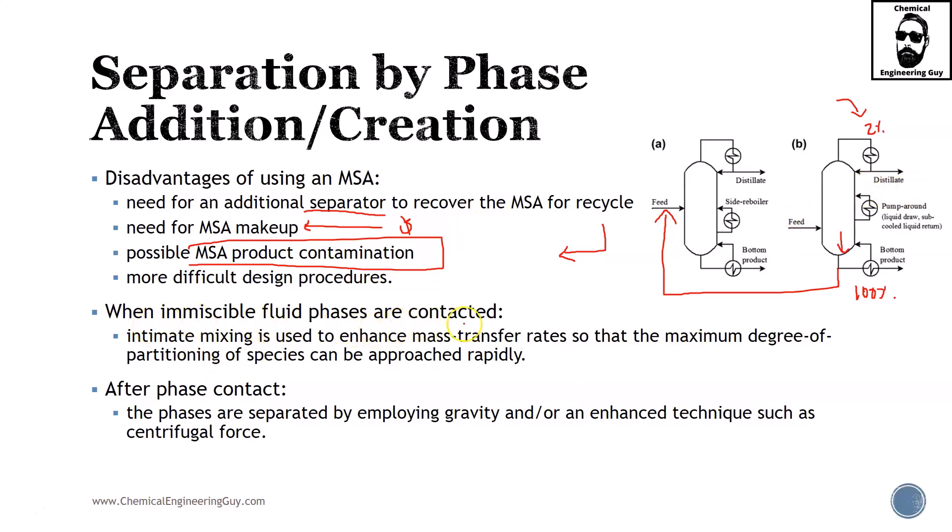When immiscible fluid phases are contacted, intimate mixing is used to enhance mass transfer rates so that maximum degree of partitioning of species can be approached rapidly. After phase contact, the phases are separated by employing gravity and/or an enhanced technique such as centrifugal force. For instance, here we're using distillation, but you could easily use a decanter which separates water and oil phase - let's say the oil phase is our product and the aqueous phase contains our MSA which can be removed.